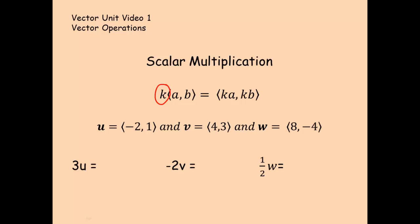Again, I'm using the same vectors we were using before. Let's do three u. So if I distribute the three onto the u, I would get negative six comma three. For negative two v, again, I'm distributing a negative two. So the resulting vector is negative eight, negative six. And lastly, I have one half times w. So that would give us four, negative two. Scalar multiplication.